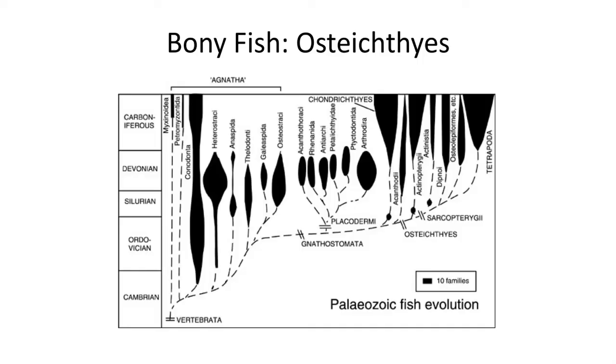Osteichthians arose during the early Devonian and quickly split into two major groups: the ray fins, called the Actinopterygians, and the lobe fins, called the Sarcopterygians.